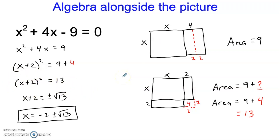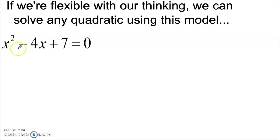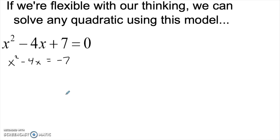We can actually use this story to solve any quadratic if we're a little bit flexible about what area means. So normally in geometry, area would have to be a positive number. That means that a problem like this would be challenging for us — this is a square, and then we're taking away a rectangle. When I do that first step of rearranging terms, I get a square minus a rectangle, and I have a negative area. So there are actually two things here that we're going to abstract a little bit and be flexible with. Doing so will allow us to continue to use this useful picture and story, but will still allow us to solve any quadratic we come across.